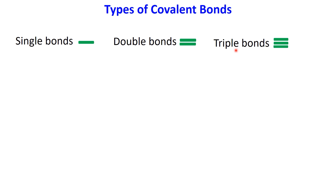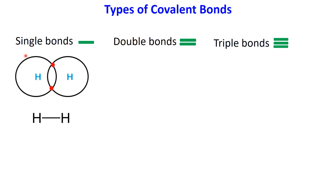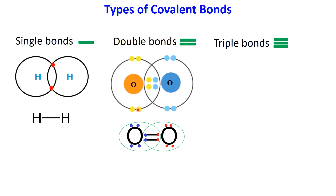A single covalent bond forms when two atoms share one pair of electrons. This is what we discussed earlier in the examples of the hydrogen molecule, H2, and the water molecule, H2O.